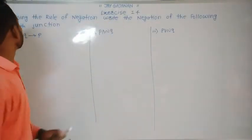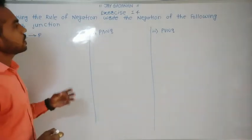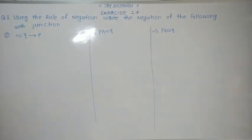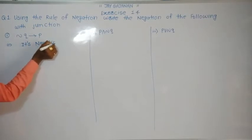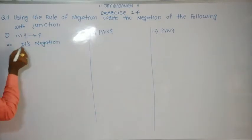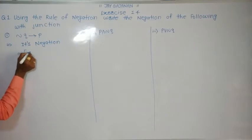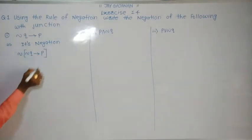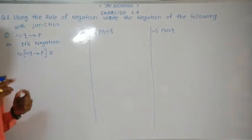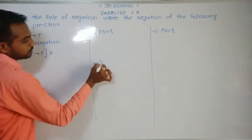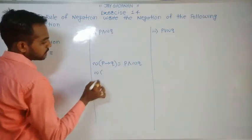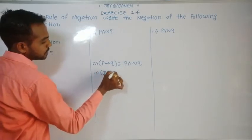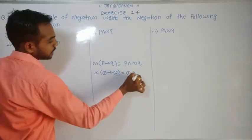Now let's start exercise 1.4. Question number 1: using the rule of negation, write the negation of the following. The first example is negation Q implies P. Its negation is negation of (negation Q implies P). We know that negation of (P implies Q) equals P and negation Q — in other words, negation of (1 implies 2) equals 1 and negation of 2.